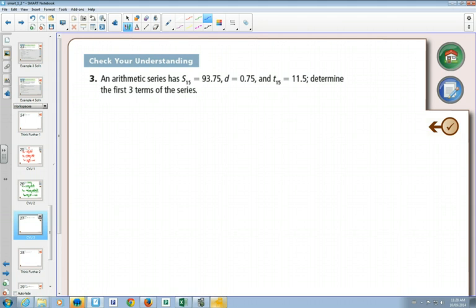If I go to the first formula, if I write it out, n times term 1 plus term n divided by 2. If I look at this formula, I ask myself, how much information could I put in there?